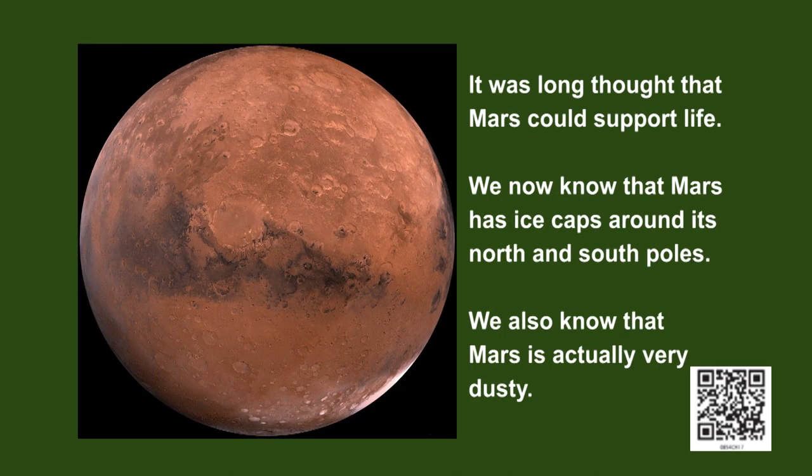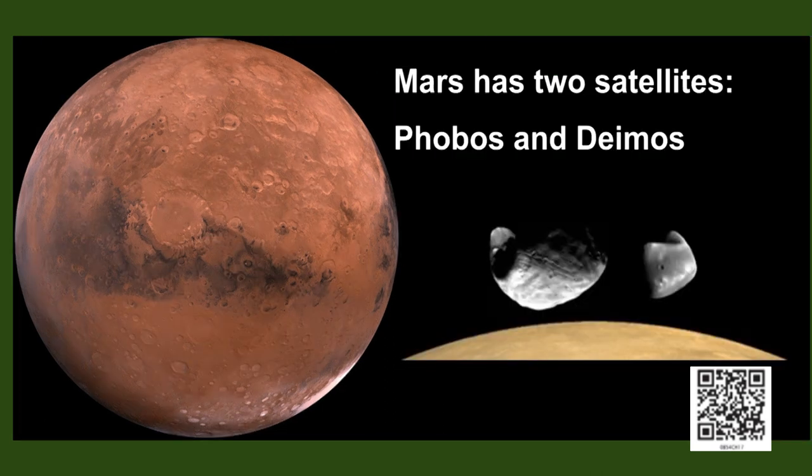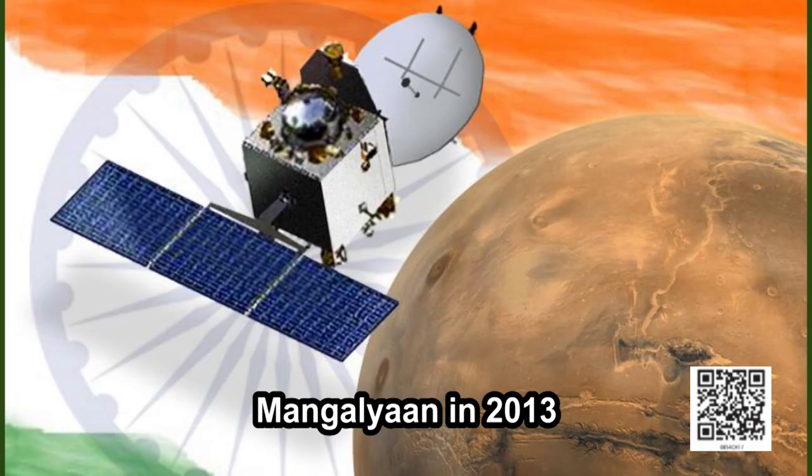Scientists have long been curious about Mars. It was long thought that Mars could support life. We now know that Mars has ice caps around its north and south poles. We also know that Mars is a very dusty planet. Mars has two satellites called Phobos and Deimos. This is the same planet to which we sent Mangalyan in 2013.